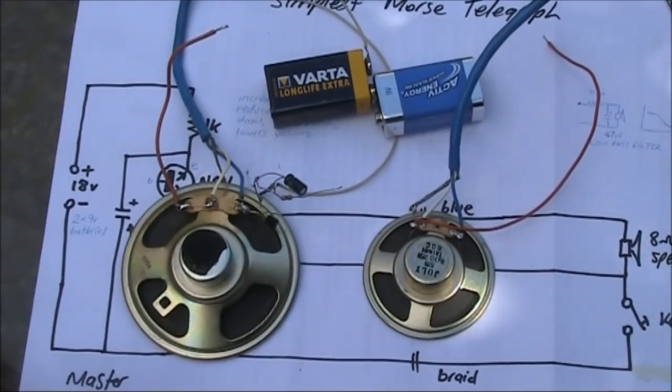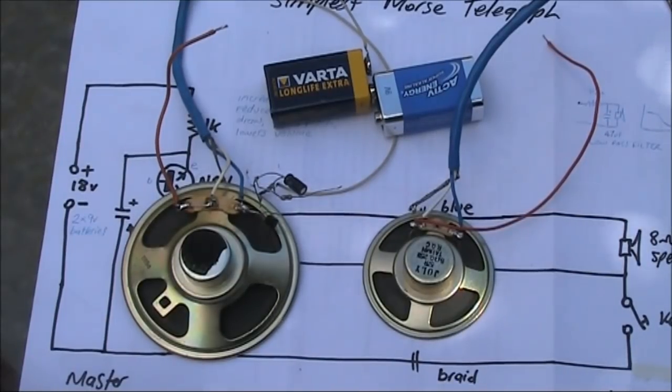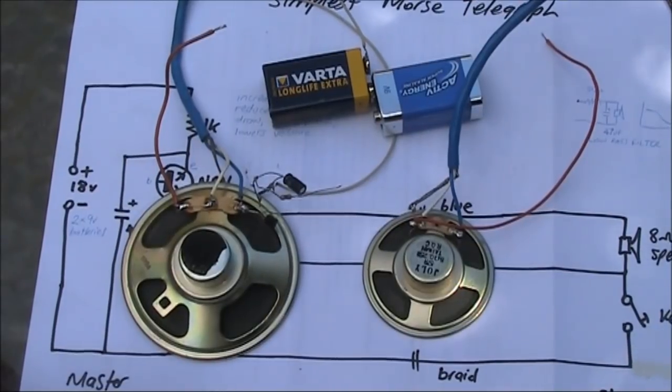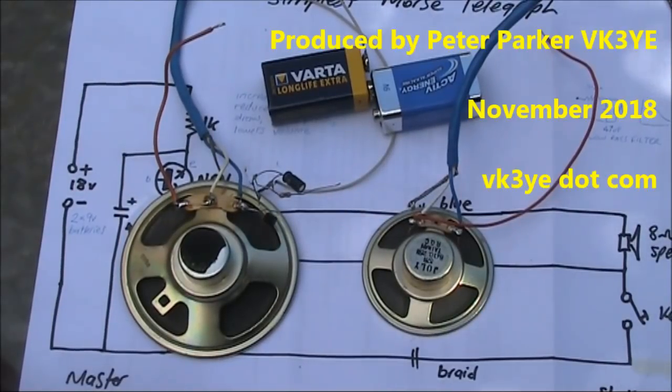Just to conclude, this is a super simple Morse telegraph system. All you need are two speakers, a 1K resistor, an NPN transistor, a 4.7 microfarad electrolytic capacitor, two 9-volt batteries, and some Cat5 or similar cable to connect between the two units, and you'll have yourself a simple telegraph system suitable for room-to-room communication. Thank you.